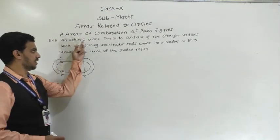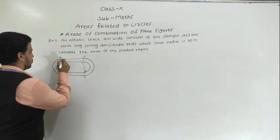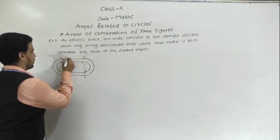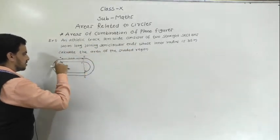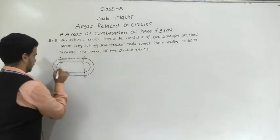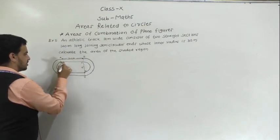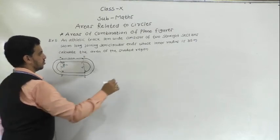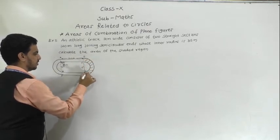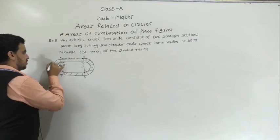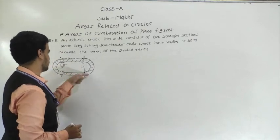The fifth example: an athletic track 14 metres wide consists of two straight sections 120 metres long, joining semicircular ends. The inner radius of the semicircular ends is 35 metres. Calculate the area of the shaded region, which is the total track.